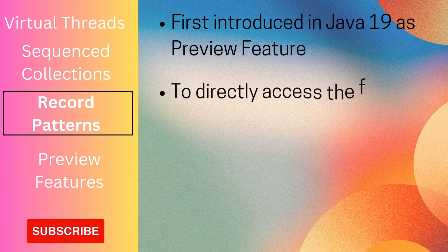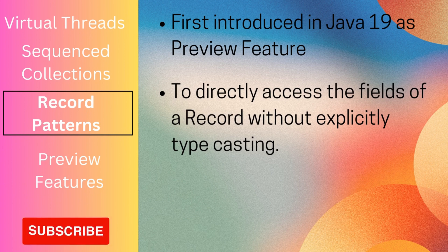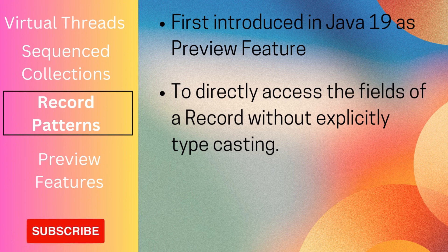The next feature is record patterns. They were also introduced in Java 19 as a preview feature. They can be used with the instanceof operator to directly access the fields of a record without explicitly typecasting. Before Java 21, we first needed to explicitly typecast and then access the fields. From Java 21, that typecasting is no longer needed.